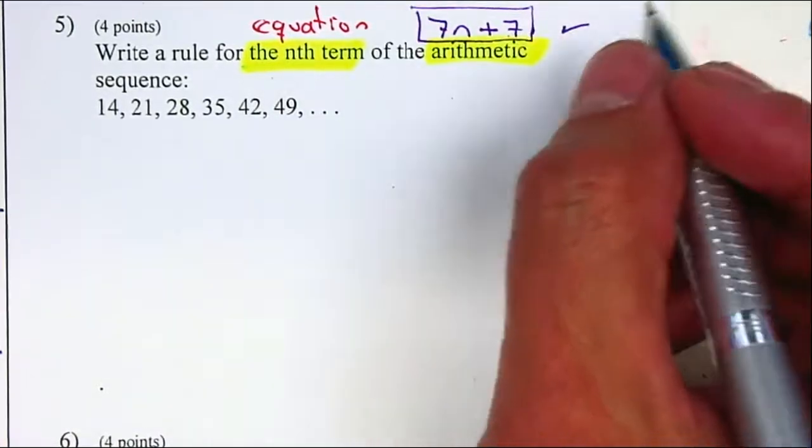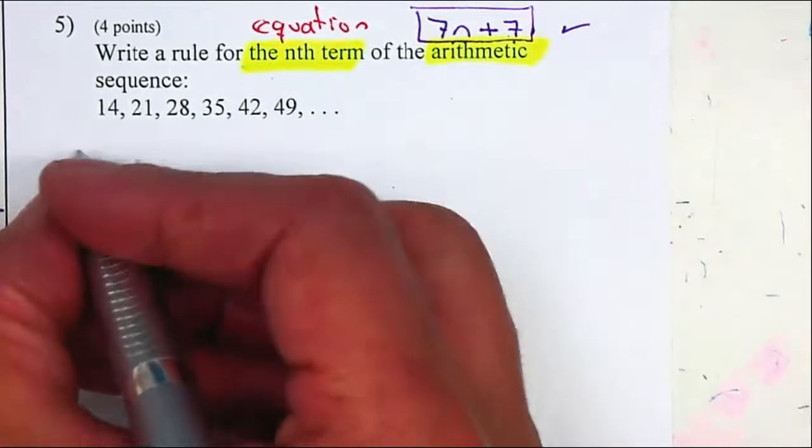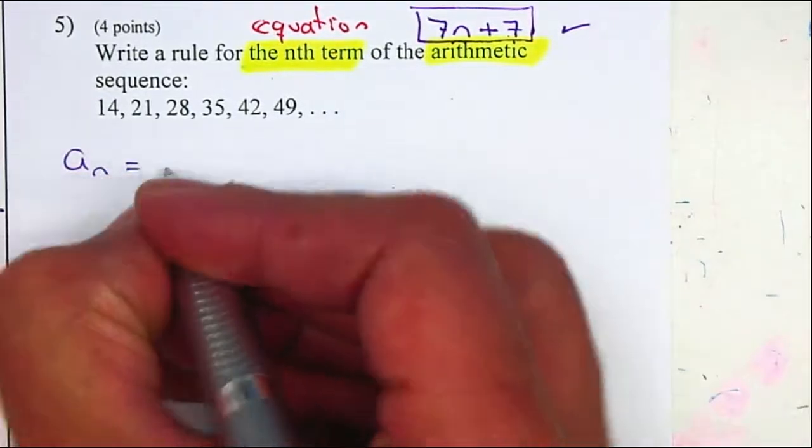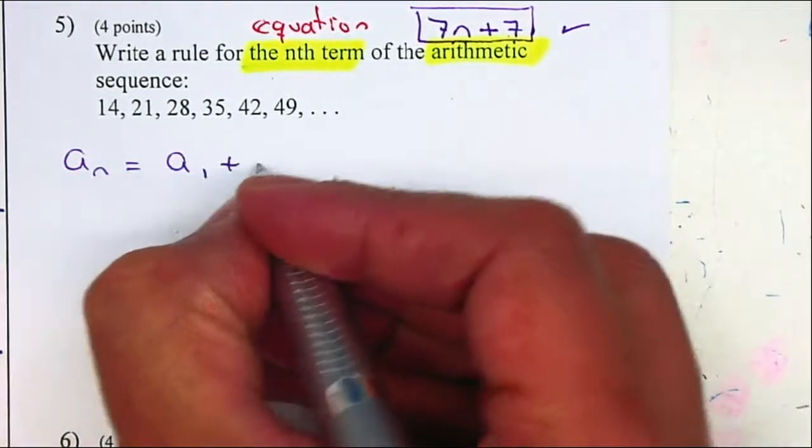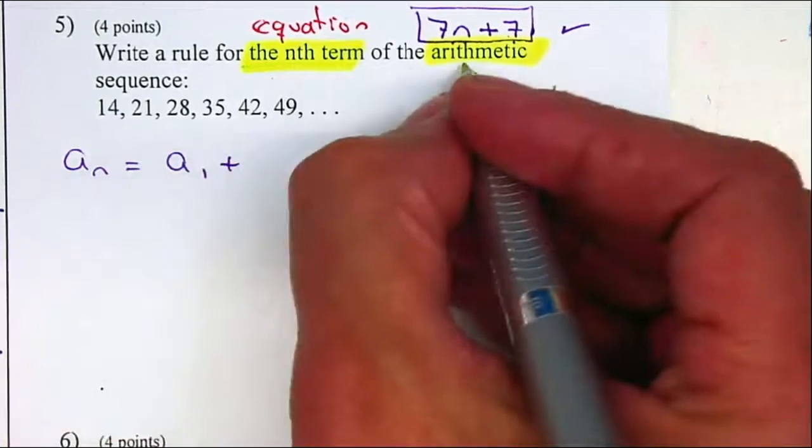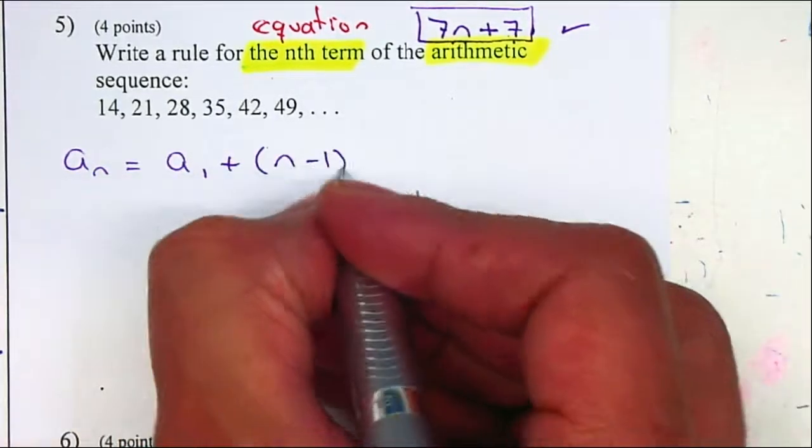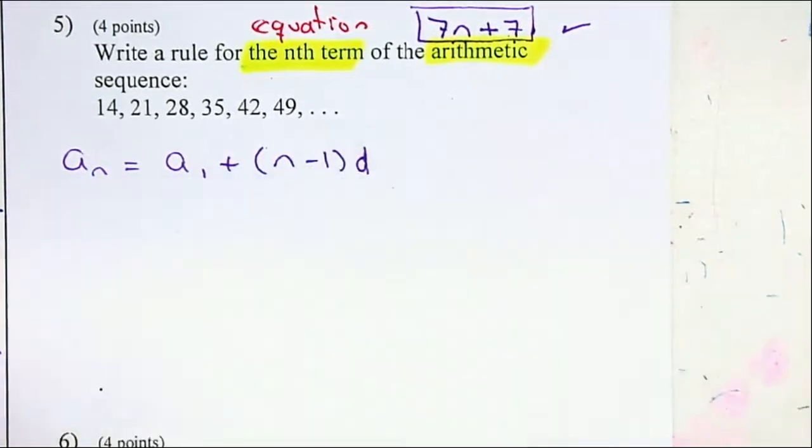But I need you guys to go through the process of the equation. a sub n is equal to a sub 1, plus, if you remember arithmetic, a sub 1 with a plus, n minus 1, and a difference. And I just plug in the information that they provide for me.